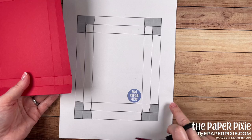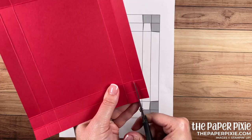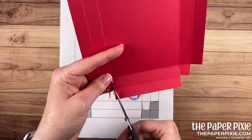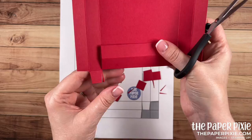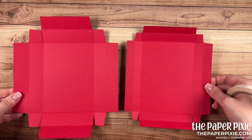Then we miter cut in all these sections as the template shows and then we'll repeat the same thing on the opposite side. So I'm going to go ahead and do that really quickly. And now our box lid is ready.